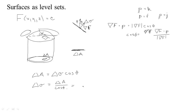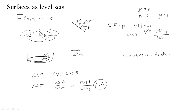To find our area conversion factor we need 1 over the cosine. So 1 over the cosine gives us the length of the gradient of F divided by the gradient of F dotted with the projection direction P, multiplied by the original area. This is how, given the area of the shadow, we multiply by this factor to get the area of the original surface. The conversion factor for a surface given as a level set is the length of the gradient divided by the absolute value of the gradient F dotted with P.